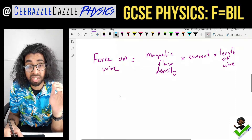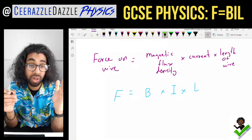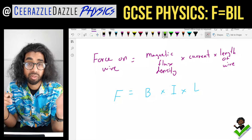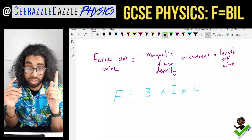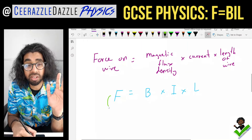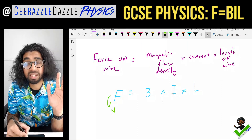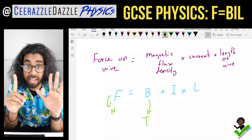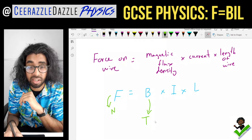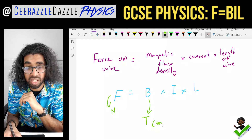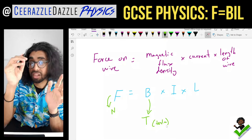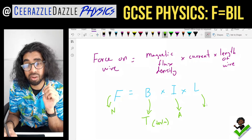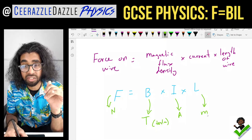In symbols: F is the force, B is the magnetic flux density, I is the current, and L is the length of the wire within the field. The units are: force is in Newtons, magnetic flux density is in Tesla (capital T) — that's a new one — current is in amps, and the length of the wire is in meters.